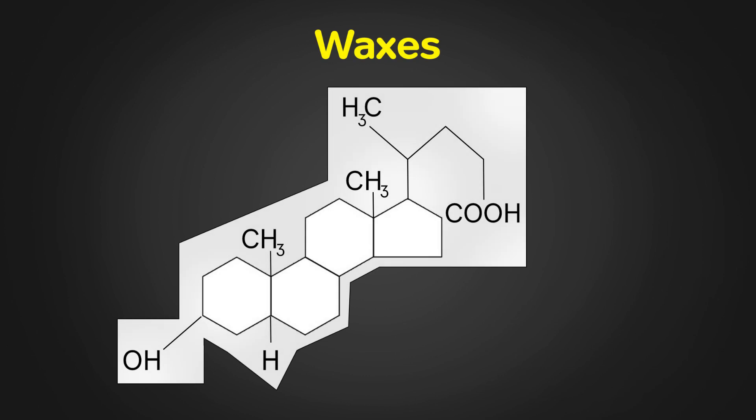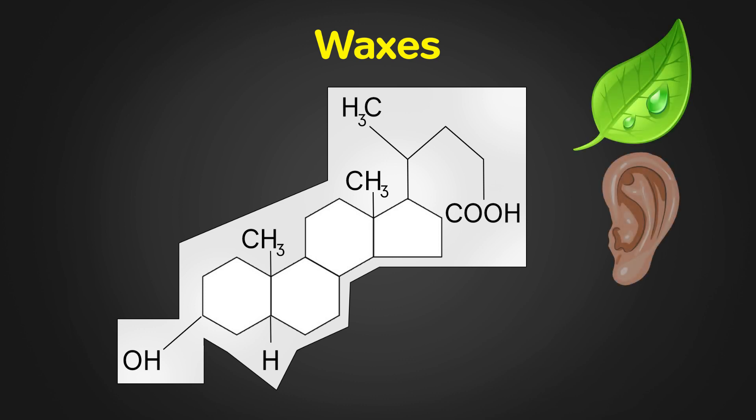They are found in the protective coating on leaves and on outer surfaces of animals. It is produced in the ears of some animals to protect the eardrum. Also bees construct honeycombs from wax.